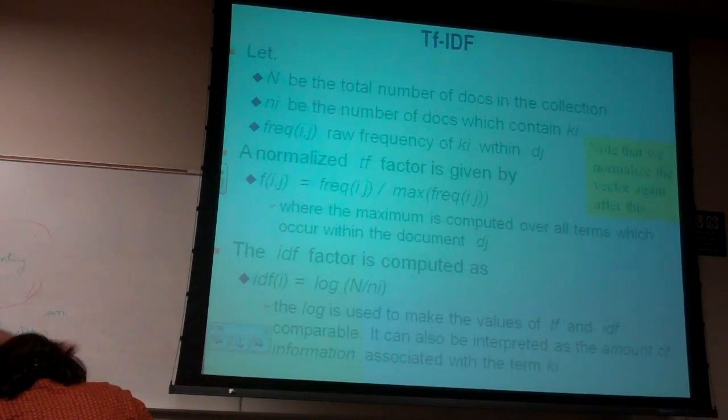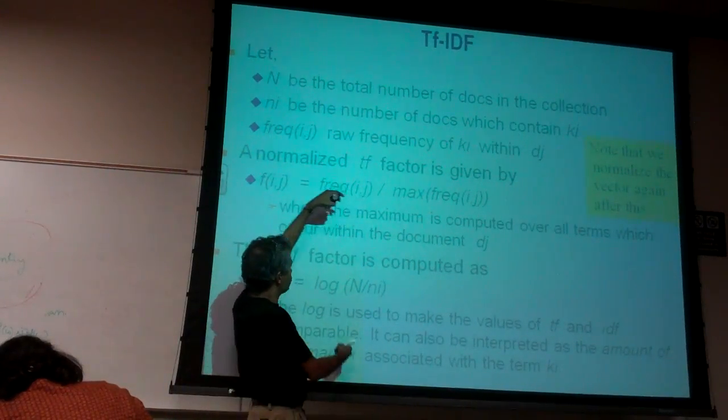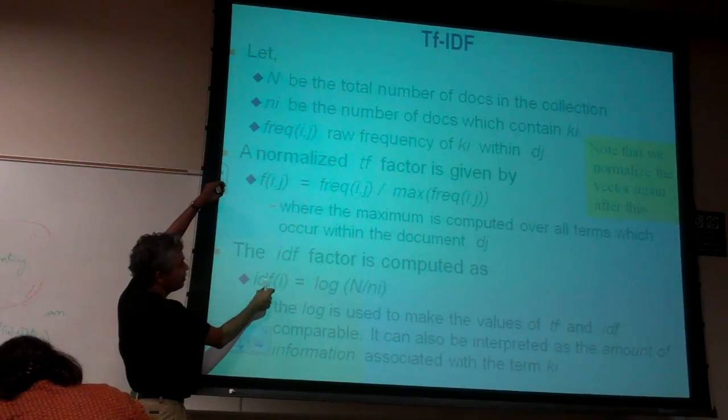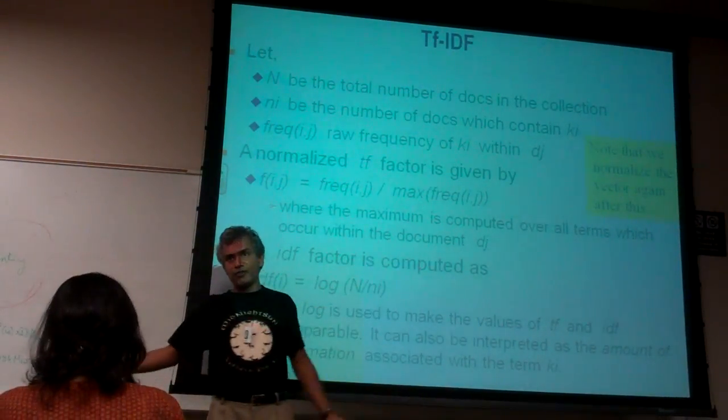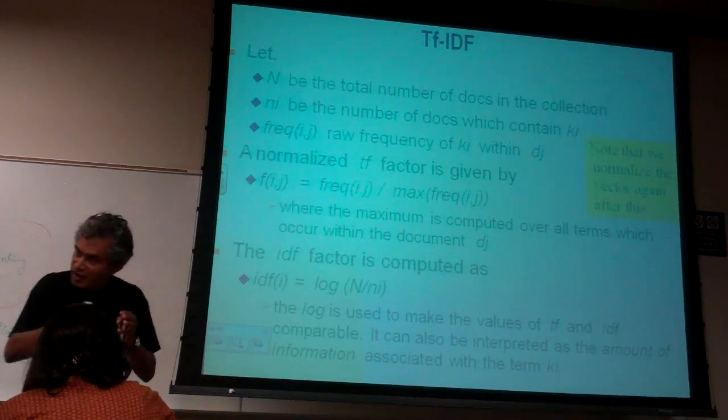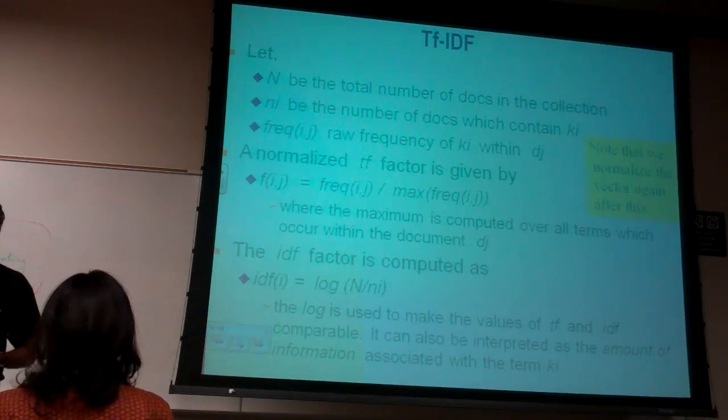So notice that by now, I've actually changed the weights of the document. So now, each weight of word i would be the TF of that word i times the IDF of that word i in the document. So each document now has a different representation.